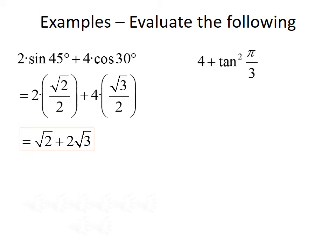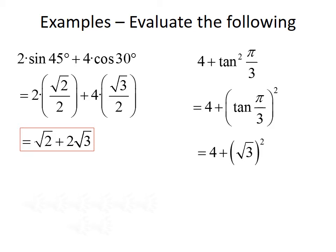Next, we want to simplify 4 plus the tangent squared of pi over 3. Remember, tangent squared means we take tangent of pi over 3 and square the whole value. From our common angles, tangent of pi over 3 is the square root of 3. So we have 4 plus the square root of 3 squared. The square root of 3 squared is just 3, so we have 4 plus 3, which simplifies to 7.